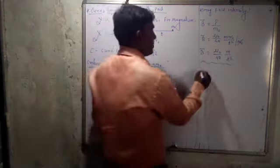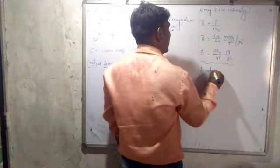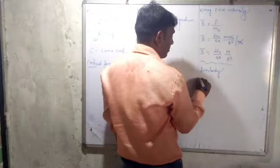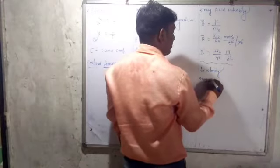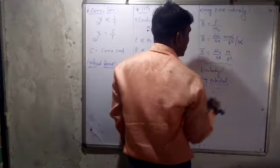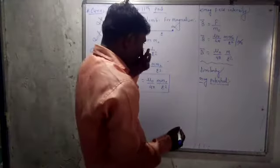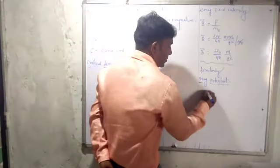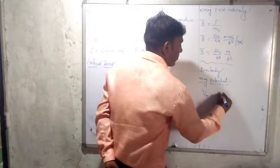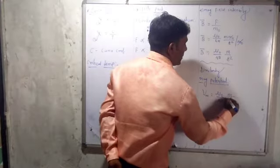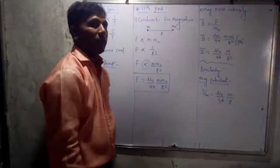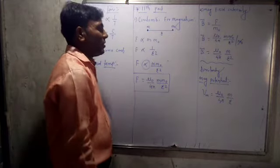Similarly, we define magnetic potential. The magnetic potential Vm is equal to mu0 upon 4pi times M upon R. This is the magnetic potential.